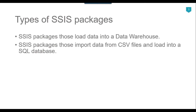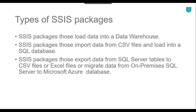One type of QA check is to make sure that all data got loaded correctly — for example, data should not have any leading or trailing spaces, it should not have double spaces, or it should not have special characters. We can also check packages that export data from SQL Server tables to CSV files or Excel files, or migrate data from on-premises SQL Server to Azure — verifying that records got exported correctly and in the correct format.